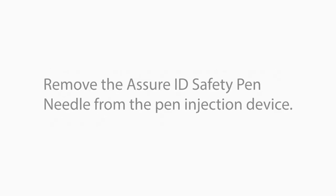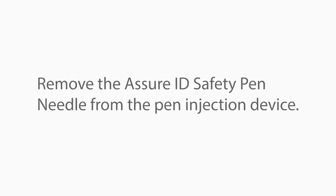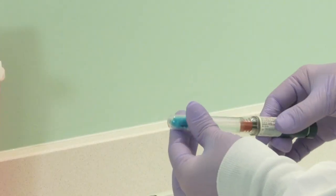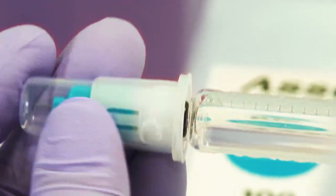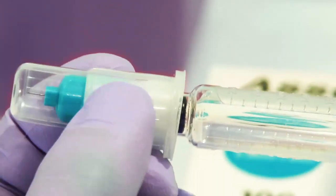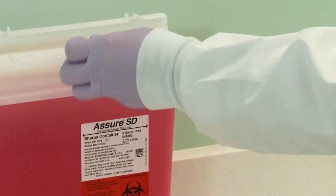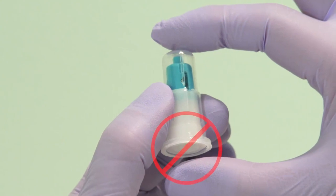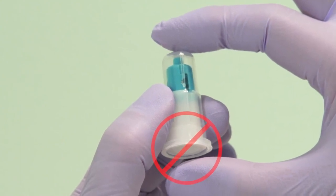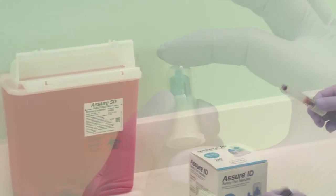To remove the safety pen needle from the pen injection device, twist counterclockwise with your fingers on the rear cover. Immediately dispose of the used safety pen needle in an approved sharps container and according to your sharps safety protocol. For your safety, do not grasp the needle by the back end at any time to prevent a needle stick.